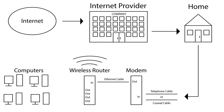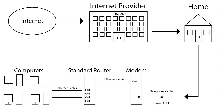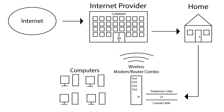If the router does not have wireless capabilities, ethernet cables must be ran from the router to each computer on the premises. Now, most internet providers provide their customers with a wireless modem-router combo, which eliminates the need for two devices.